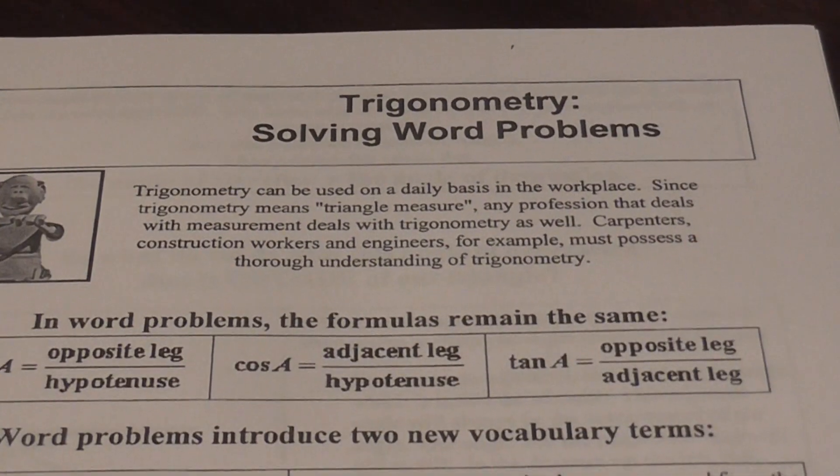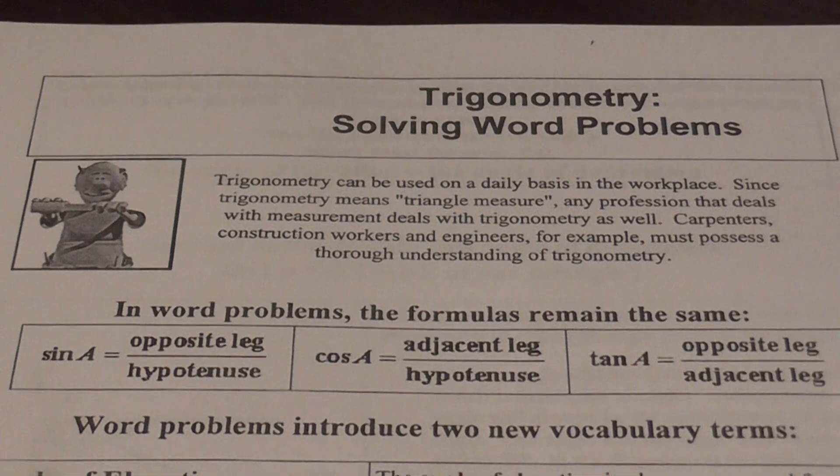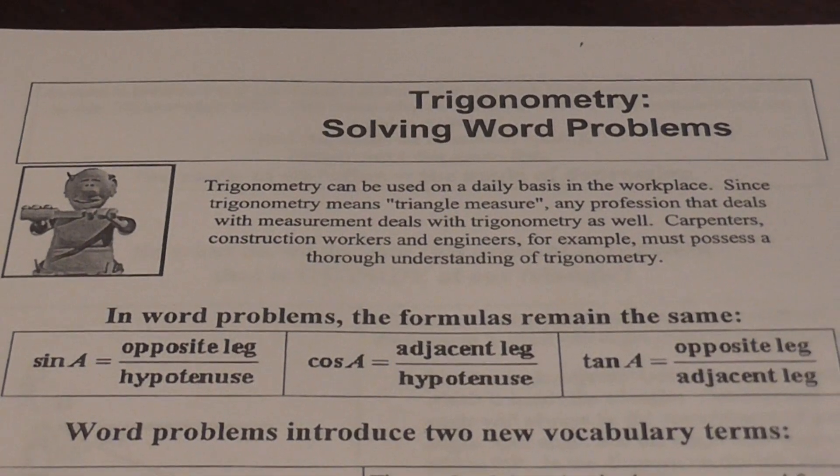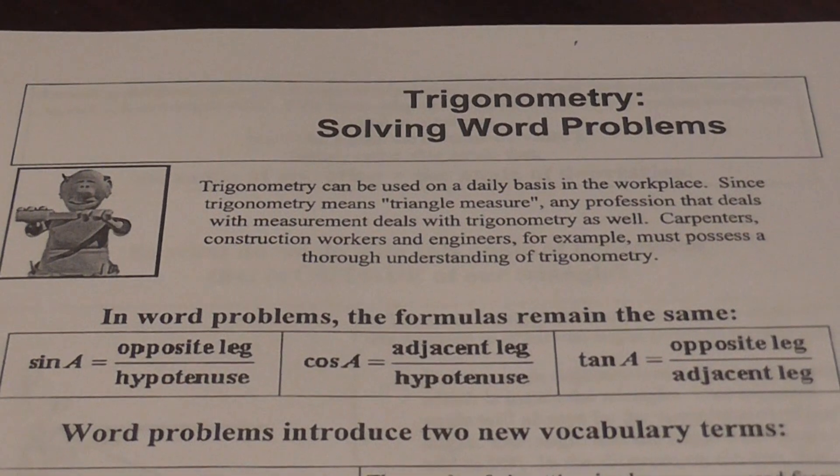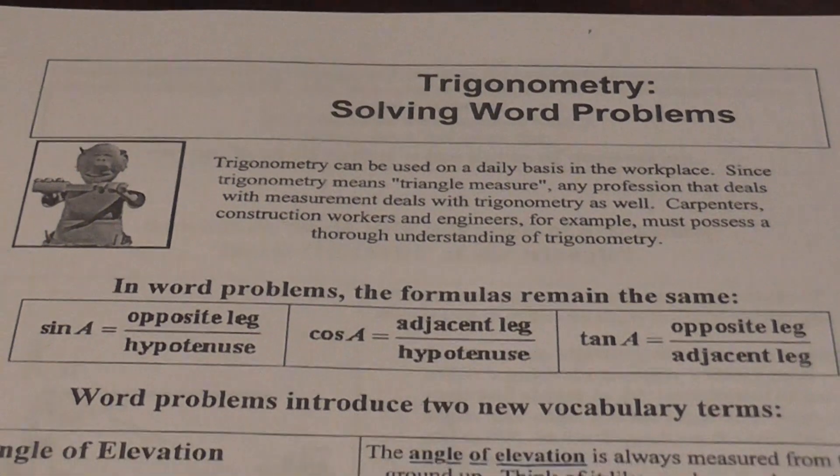Okay, so solving word problems, your sine, cosine, and tangent don't change. Sine is still the opposite over hypotenuse, cosine is still the adjacent over the hypotenuse, and tangent is still the opposite over the adjacent.